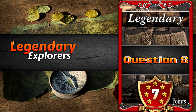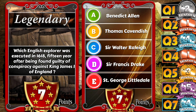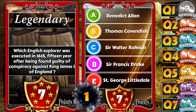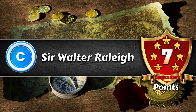Question 8. Legendary Explorers. Which English explorer was executed in 1618, 15 years after being found guilty of conspiracy against King James I of England? Benedict Allen. Thomas Cavendish. Sir Walter Raleigh. Sir Francis Drake. St. George Littledale. The answer is Sir Walter Raleigh.